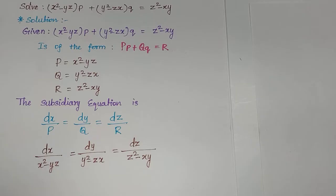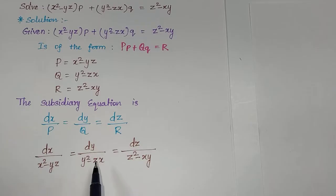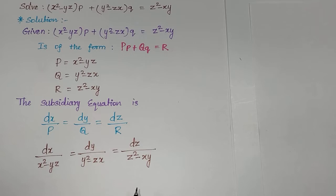Substituting the P, Q, R values into the subsidiary equation: dx/(x² - yz) = dy/(y² - zx) = dz/(z² - xy). After substituting all values we have to apply multipliers and find C1 and C2.